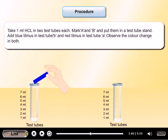Add blue litmus in test tube A and red litmus in test tube B. Observe the color change in both.